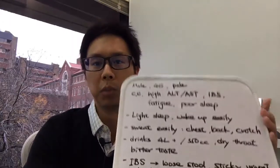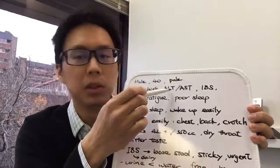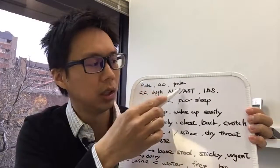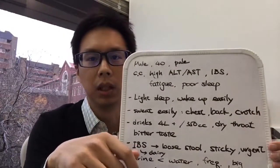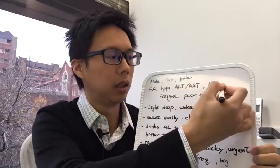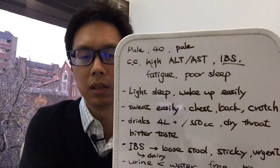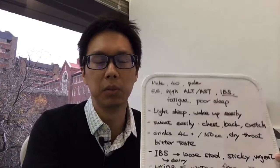This patient, when he came to me, the main complaint is that he just went for a health check and he found out that his liver enzymes are a little too high. There are two numbers, ALT and AST. He didn't give me the exact numbers, but he told me they're high. And he has a history of IBS, so irritable bowel syndrome.